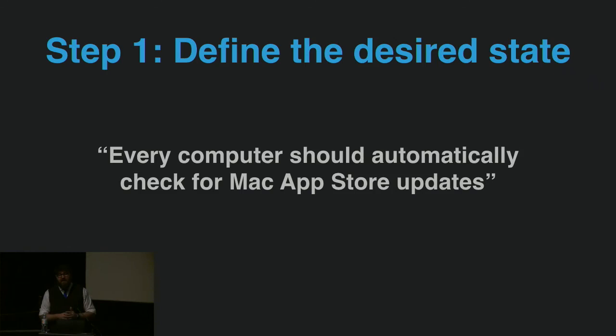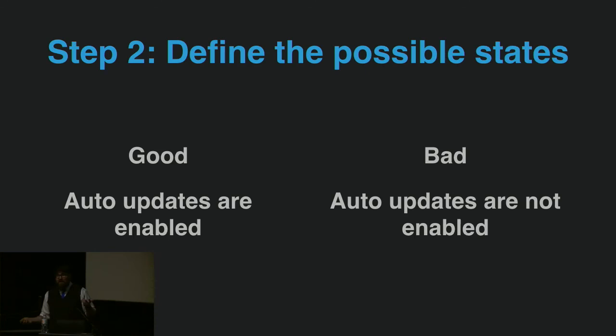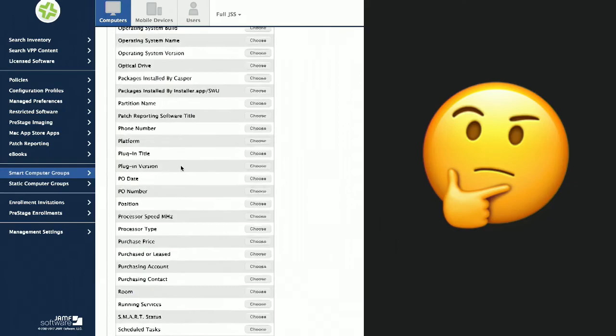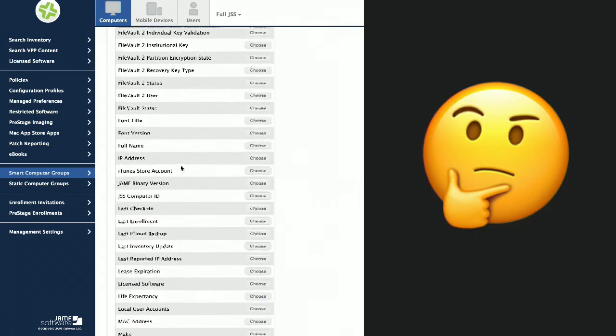In that case we have to go with a different method. Like before, we define our desired state — in this case we want every computer to automatically check for updates from the Mac App Store. Defining the possible states: updates are enabled or they're not — yes or no. Now we go back to our smart group and figure out how to get this information, but that criteria is not built into the inventory of Jamf Pro out of the box.